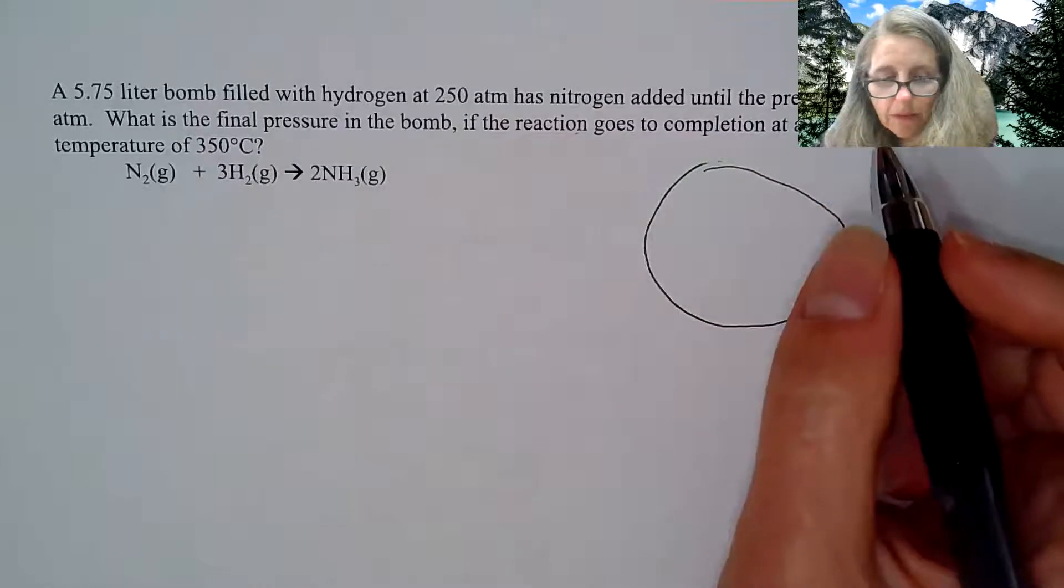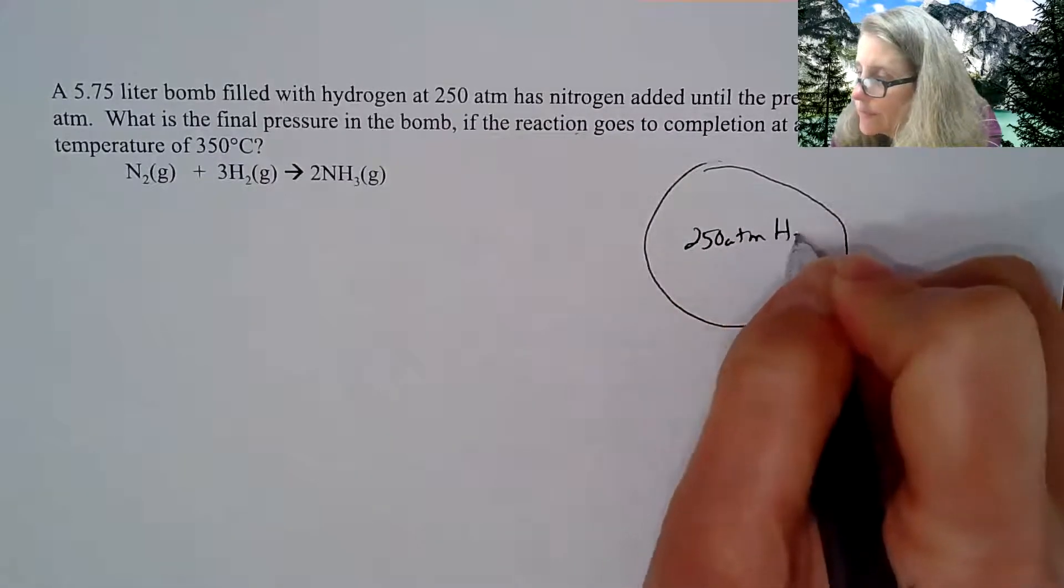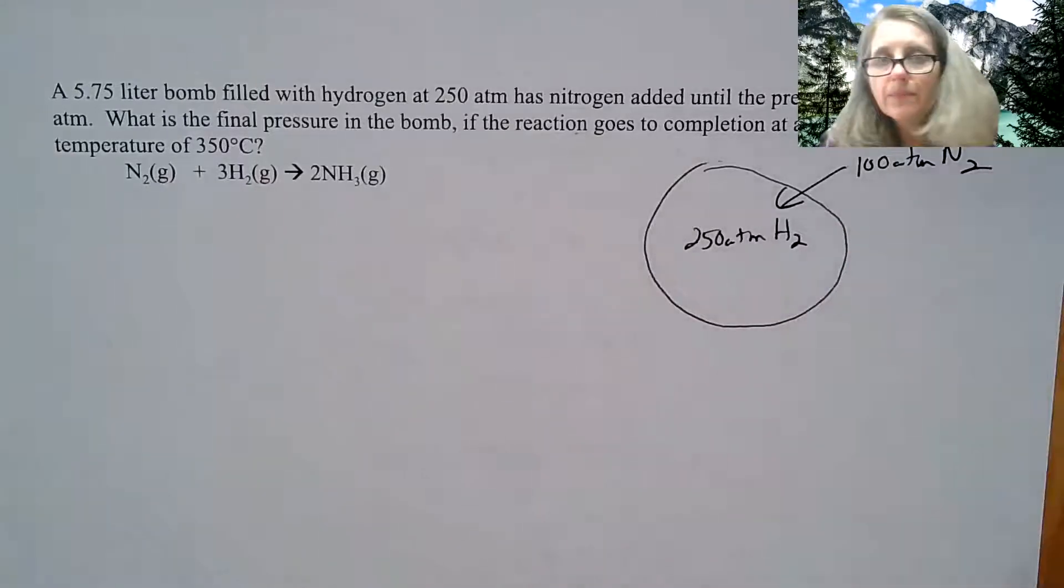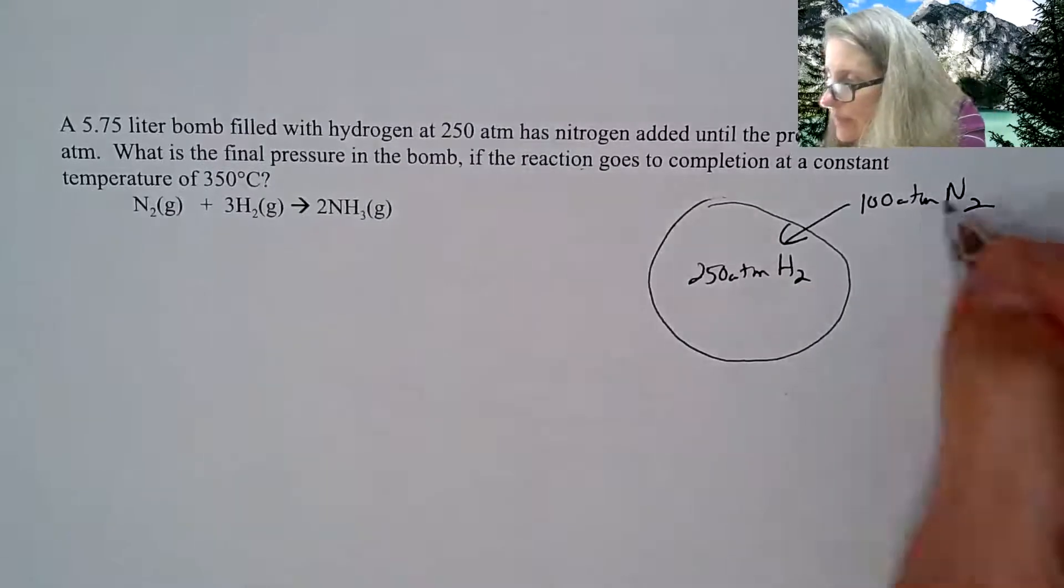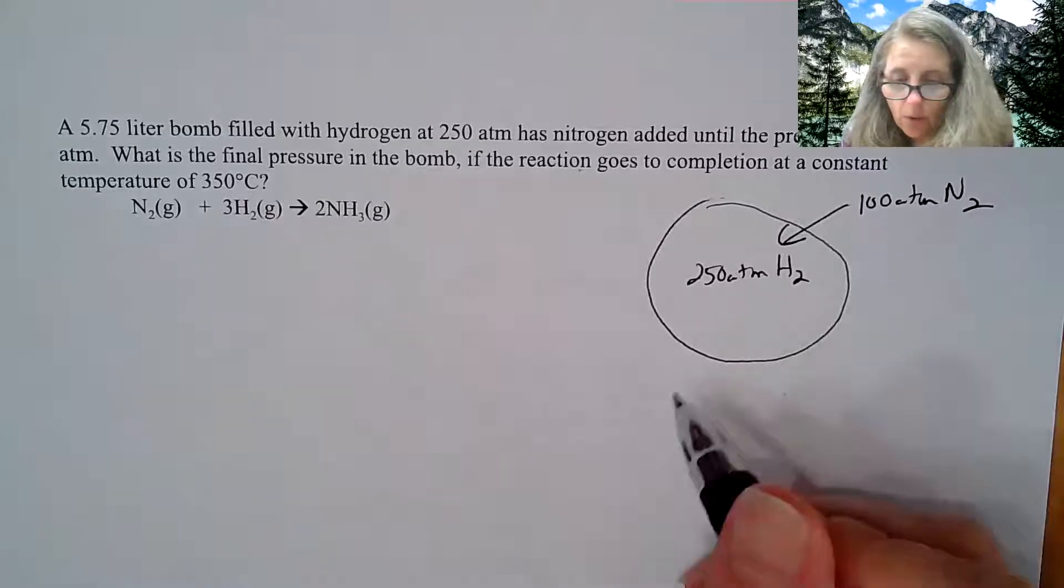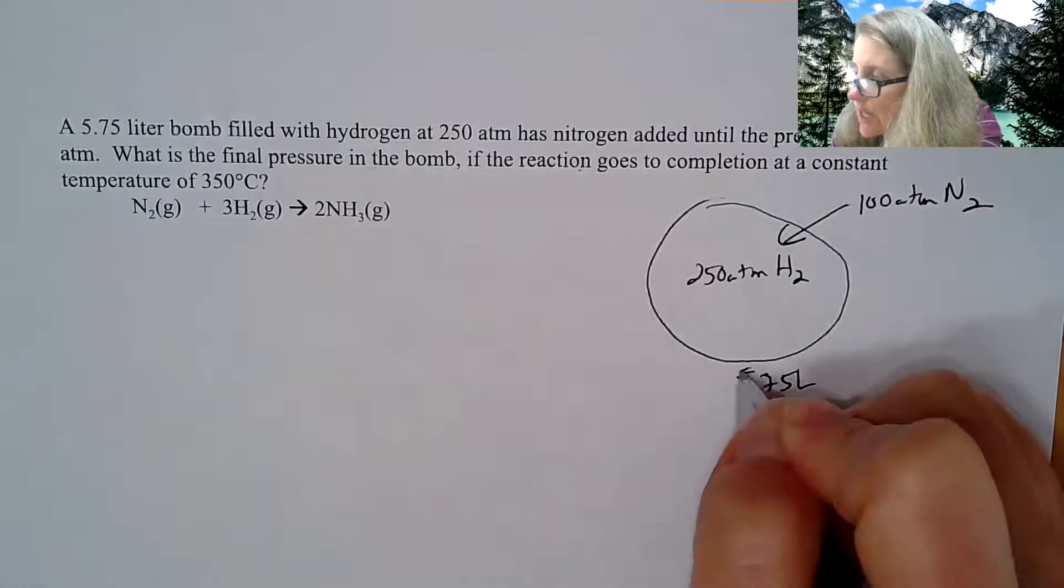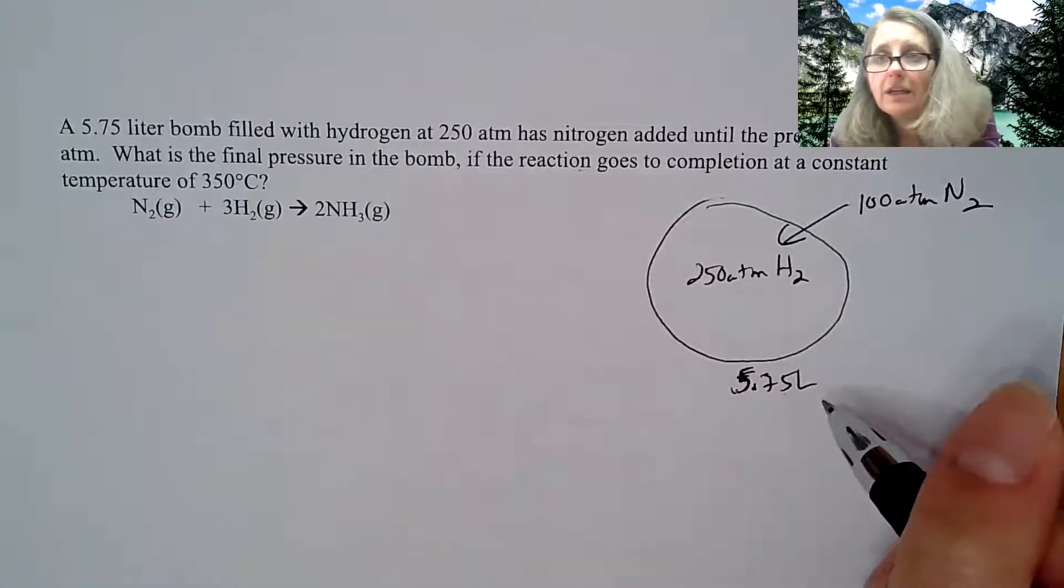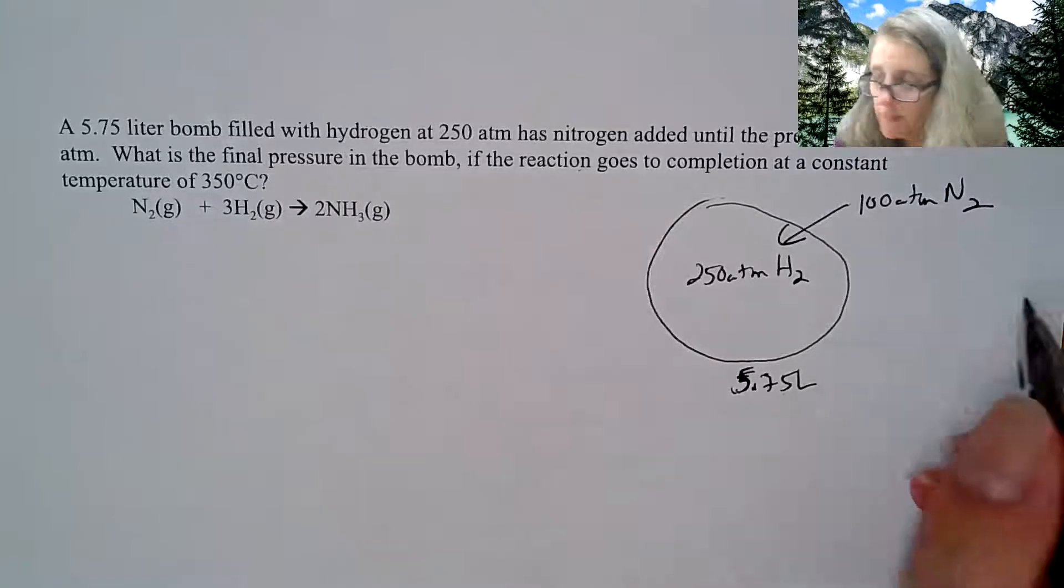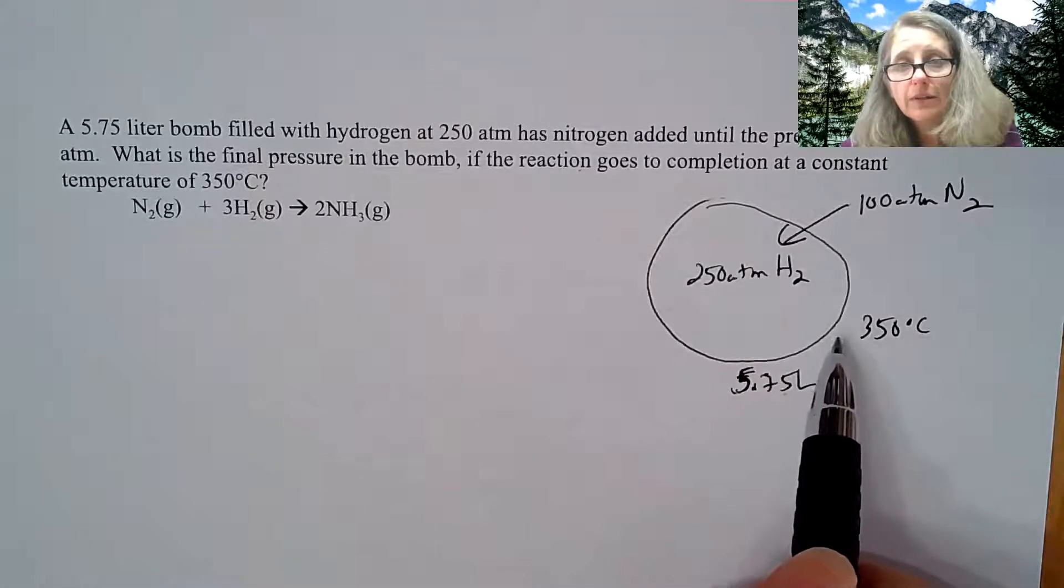It sounds exciting because I said the word bomb, but really just draw a circle over here for our bomb. In the container, I have 250 atmospheres of hydrogen, and then I'm piping in 100 atmospheres of nitrogen. Hydrogen and nitrogen do react, so I am going to get a chemical reaction. The total volume here is 5.75 liters. It's called a bomb because I'm not going to change the liters here. Even if pressure builds up, it's not going to change the volume.